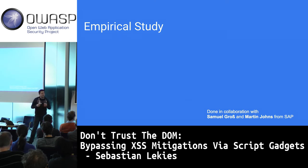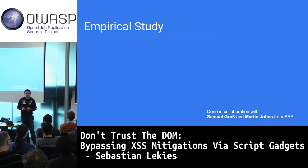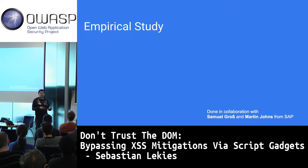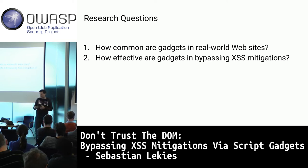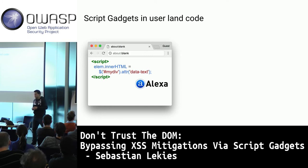As a next step, we conducted an empirical study together with SAP, Samuel Gross, and Martin Johns. We wanted to find out whether gadgets exist in real-world pages too — not just generic library code but also developer-written code. We asked how common gadgets are in real-world applications and how effective they would be in bypassing XSS mitigations on real websites.